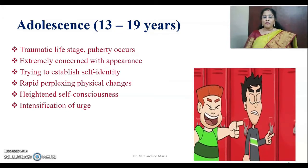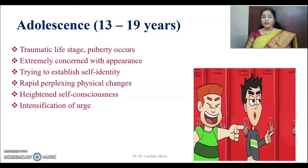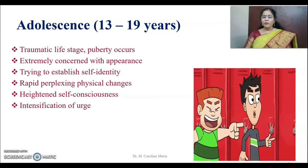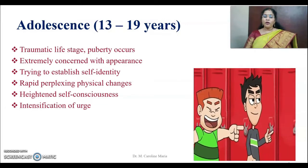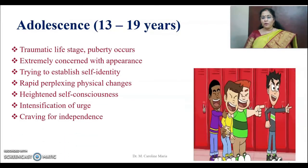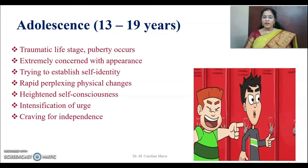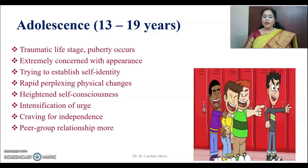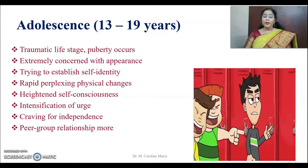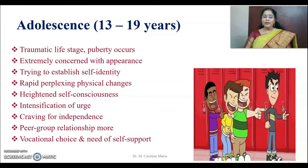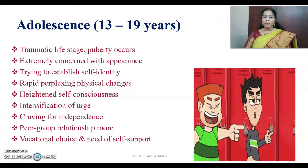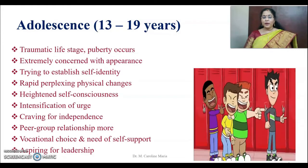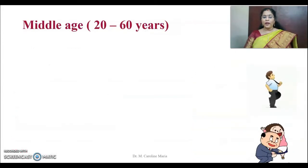Adolescents have heightened self-consciousness and are most of the time bothered about what others think of them. There is a strong urge toward intensification — they want to know about everything happening in the world and engage in adventurous activities like bike racing. They crave independence and, when given pocket money, don't want to account for it. Peer group relationships become more important than family relationships. This is the stage where they need a lot of support and guidance regarding vocational choices. Most of the time, they aspire for leadership and come forward to take the lead.